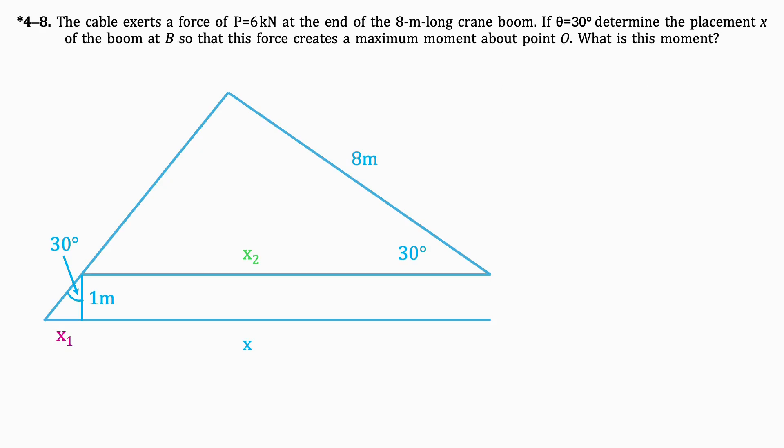Let's solve for X1 first. We know that tan of 30 degrees is X1 over 1. By isolating for X1, we get that it equals 0.58m.